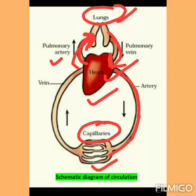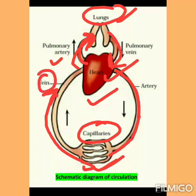In the cells, the respiration process occurs: food is broken down in the presence of oxygen, releasing energy, CO2, and H2O. The carbon dioxide produced makes the blood deoxygenated. Veins carry this deoxygenated blood from the cells back to the heart. From the heart it goes to the lungs again, and from the lungs back to the heart — this circulation cycle repeats continuously many times per minute.